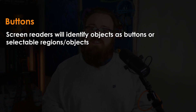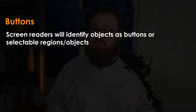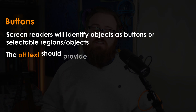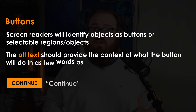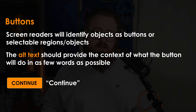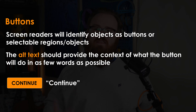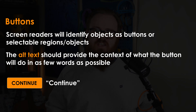This same basic principle can be applied to buttons in all of our content, whether that's a continue button or a submit button. The screen reader will automatically pick up that this is a button or selectable region or area. The alternative text should say 'continue', 'submit', 'next', 'previous' — whatever the context of the button is, that's what should be in there. We should not be writing sentences such as 'click this button to continue to the next screen'.